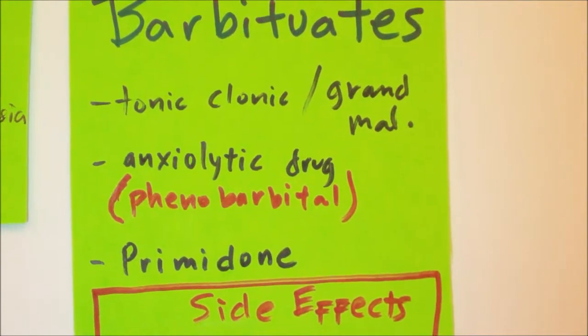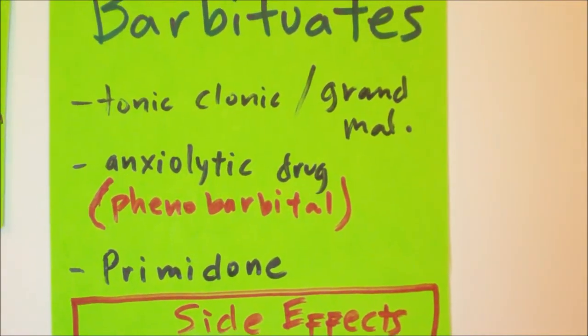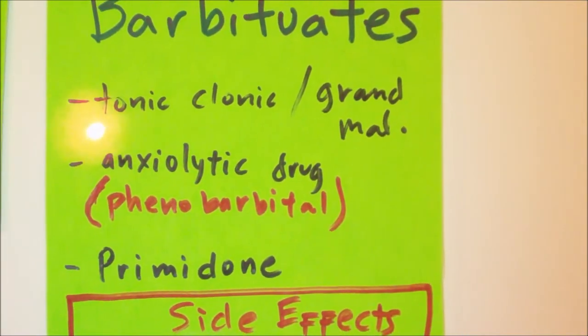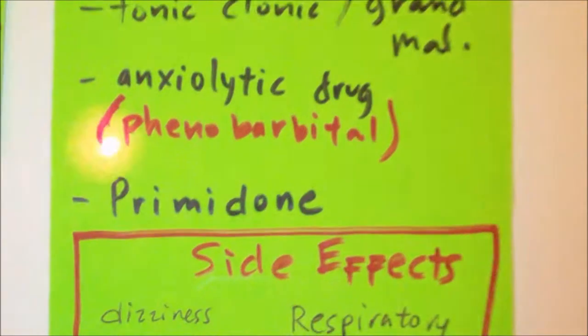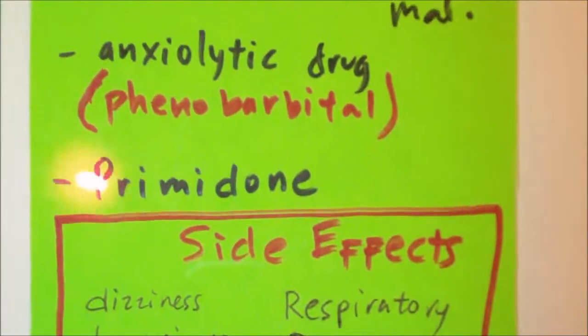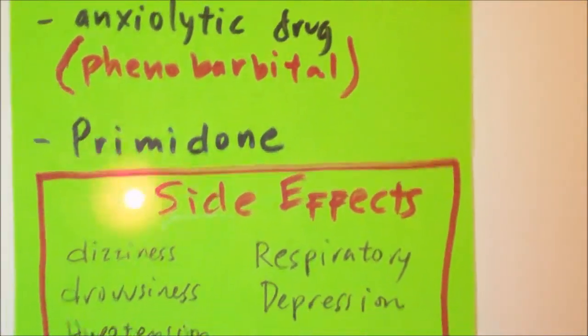The types of barbiturate drugs we need to know for the NCLEX include phenobarbital, which is Luminal, and primidone, which is Mysoline.